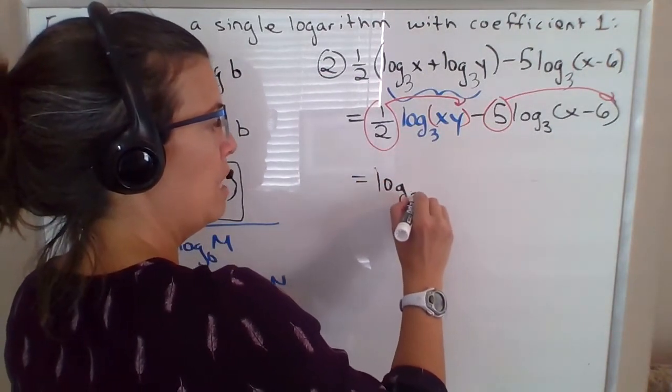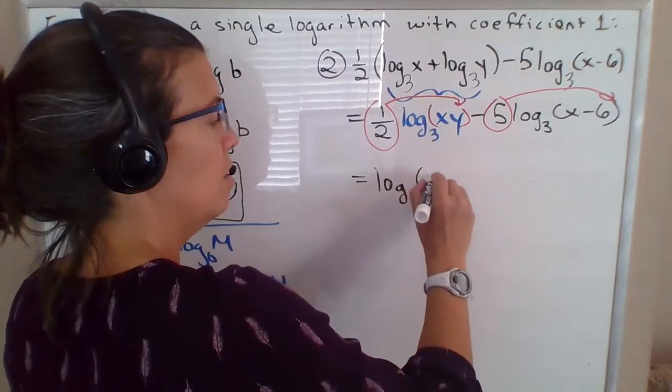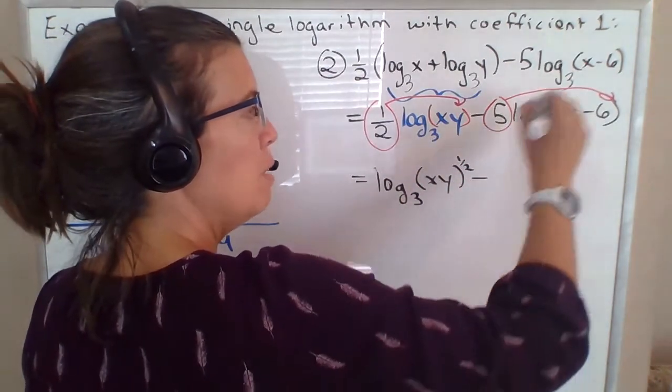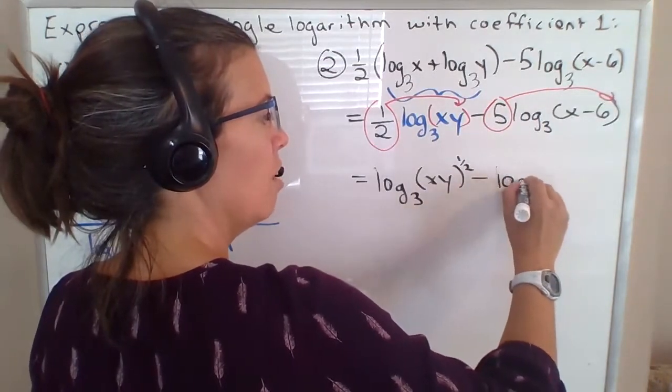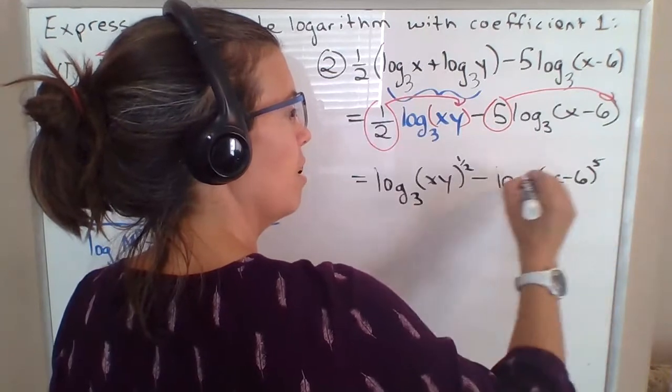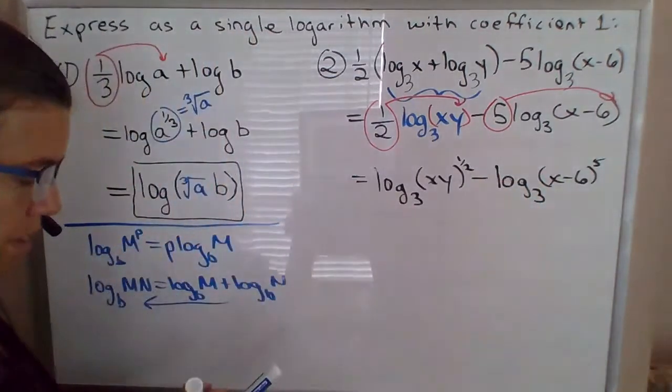But so I have log base three of x times y to the one half. And then I'm going to move up just the five. So this is log base three of x minus six to the fifth. Okay. It's going to be just one more step here.